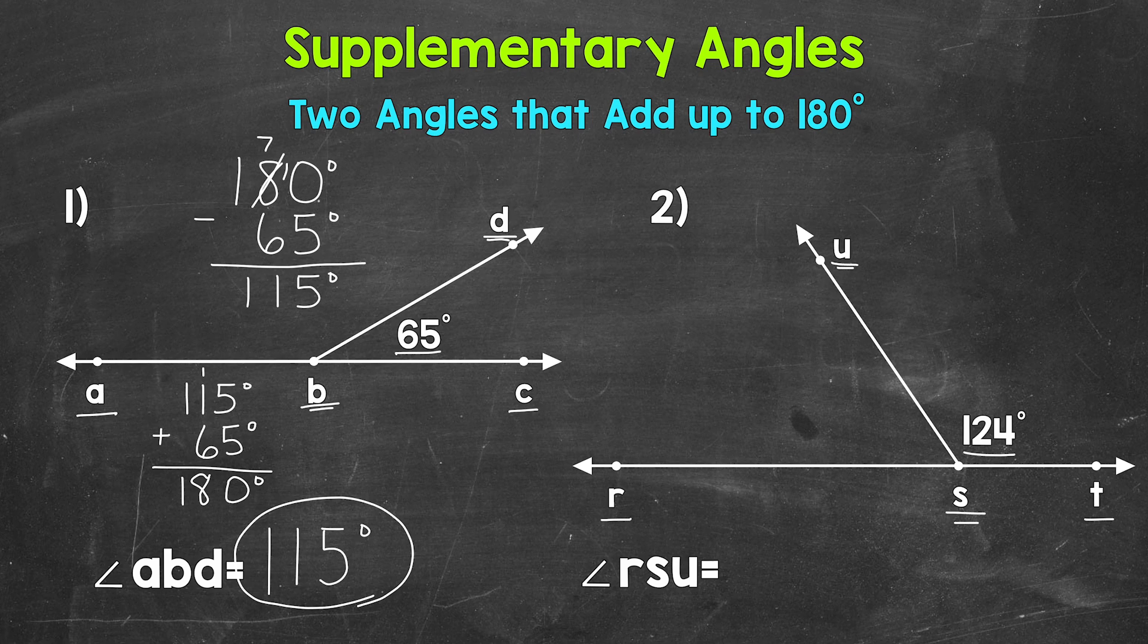Let's calculate what that missing or unknown angle measure is by taking 180 degrees and subtracting our given angle measure of 124 degrees. So we'll start with 0 minus 4. We need to borrow. So we have 10 minus 4, which is 6.